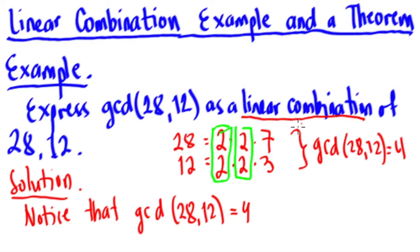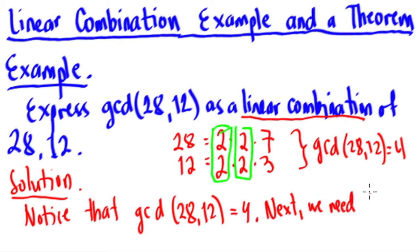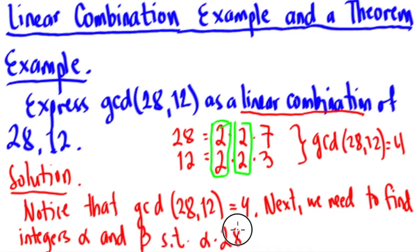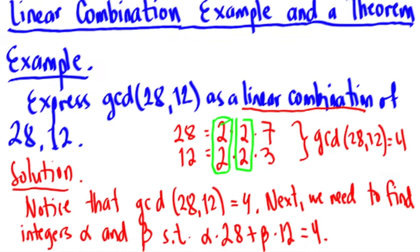So the GCD of 28 and 12 is 4. Next, we need to find integers alpha and beta such that alpha times 28 plus beta times 12 equals 4. What are the values of alpha and beta that will give us 4?